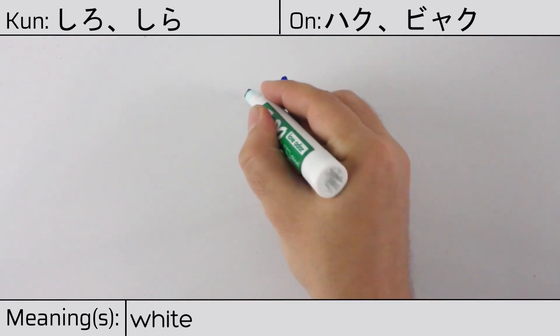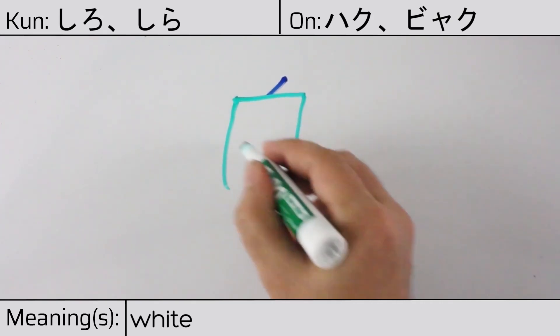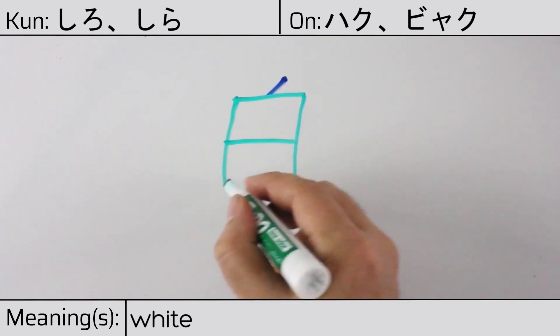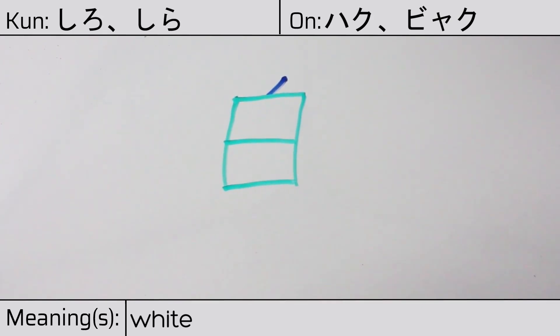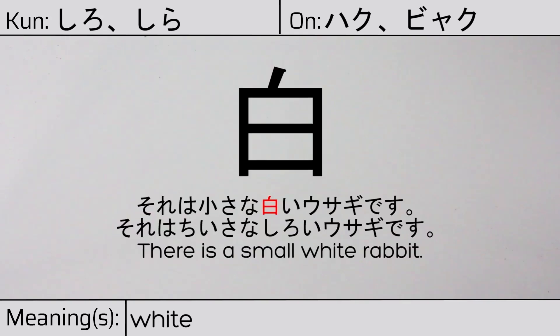This character is made up of the following radicals or parts: a dot at the top, followed by hi meaning day or sun. Our example sentence is: それは小さな白いうさぎです — That is a small white rabbit.